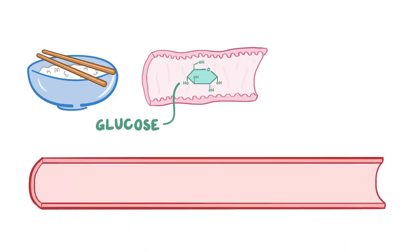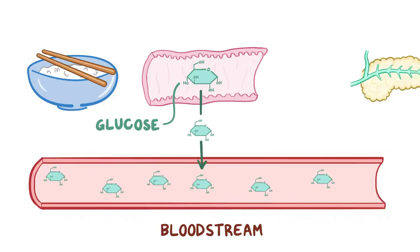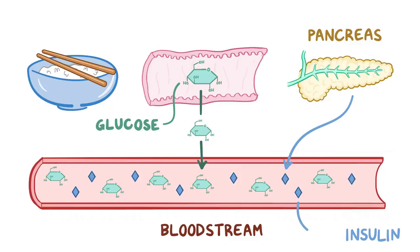Glucose moves from the small intestine into the bloodstream, and blood glucose levels rise, which causes the pancreas to secrete a hormone called insulin.